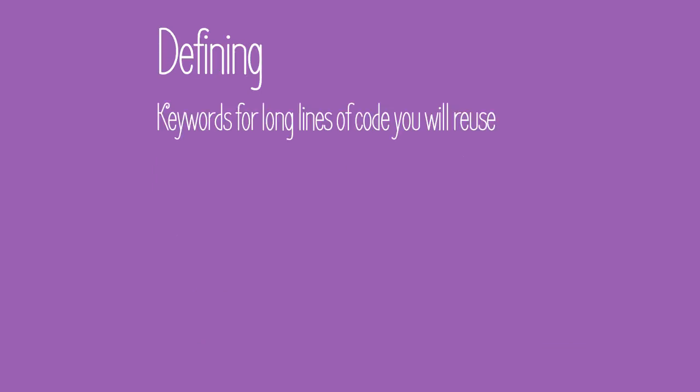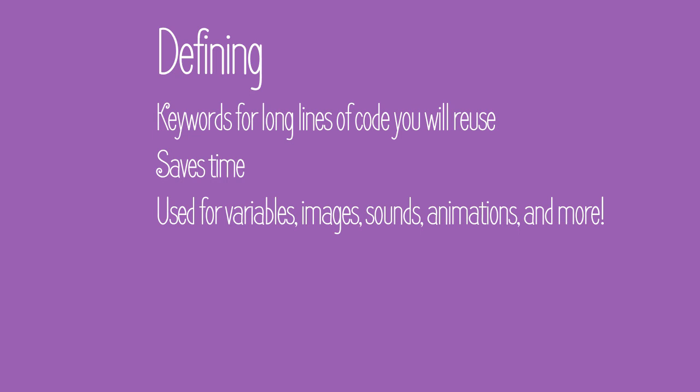The next term is defining. This term is used whenever you want to create a keyword for a line of code that you will use over and over again in your script files. This process reduces the amount of time it takes to do simple actions. Defining can occur for variables, images, sounds, animations, and a whole bunch of other things.